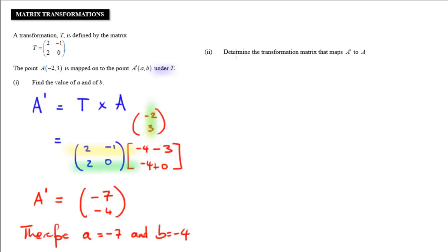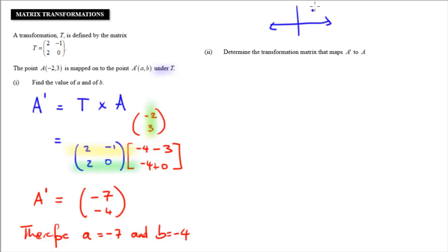The second question asks us to determine the transformation matrix that maps A prime to A. Think about what we just did: we had transformation T, we had point A, and we moved it to A prime. Now we want to undo that — we want to map A prime back to A. If we're going to undo it, that simply means we find the inverse of that transformation — its opposite, what undoes it.